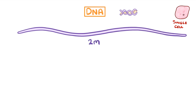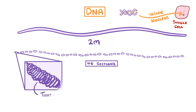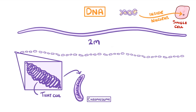So to stop this from getting all tangled up and so that it's compact enough to fit inside the nucleus, it's actually separated into 46 different sections. And each of these sections is actually a really tight coil which forms something we call a chromosome.